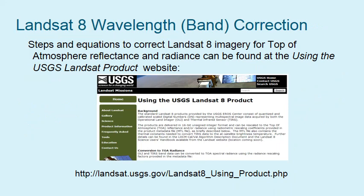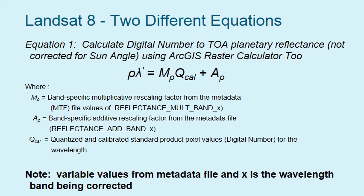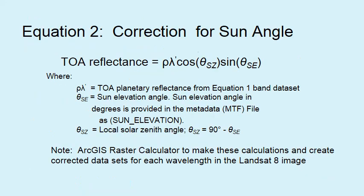Landsat 8 radiometric correction is a little bit different. You can go to a USGS link which has the equations and how to use them. The first equation goes the same way — you take the digital numbers to top of atmosphere reflectance values with energy units. The values you need are again in the metadata file, and you have to do it for each wavelength you want to correct. Equation 2 corrects for the sun angle using the zenith angle again, and you can use Raster Calculator to input all the values you find.